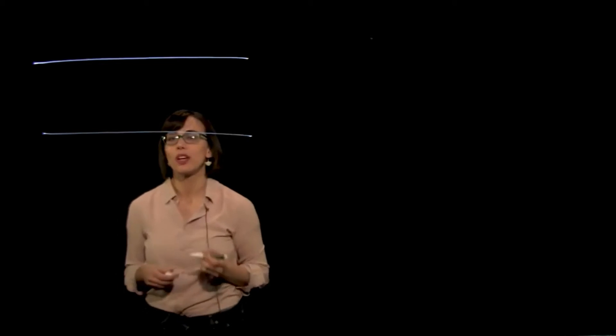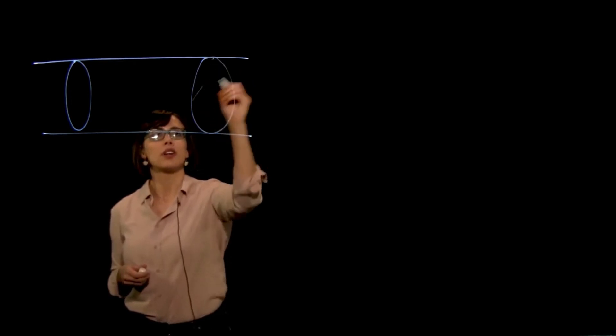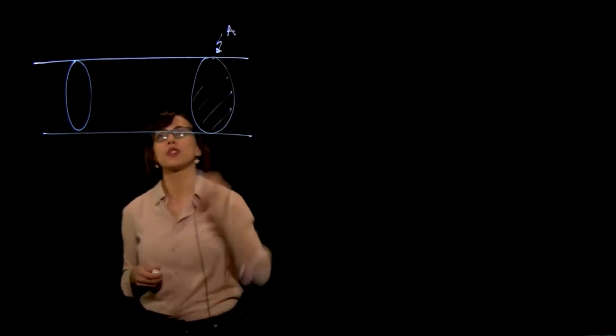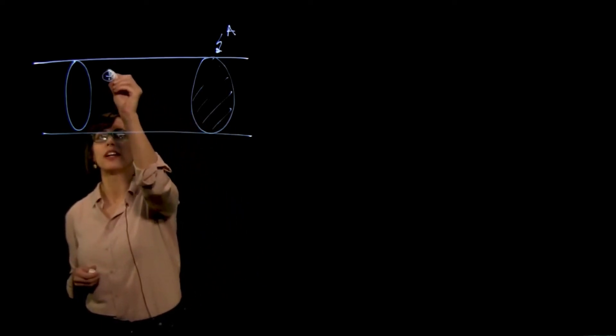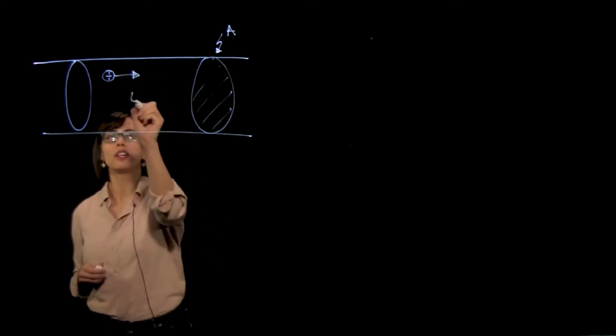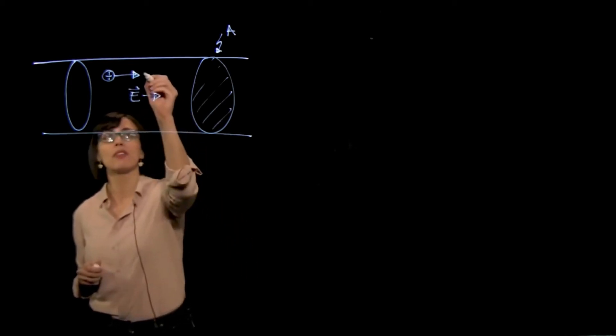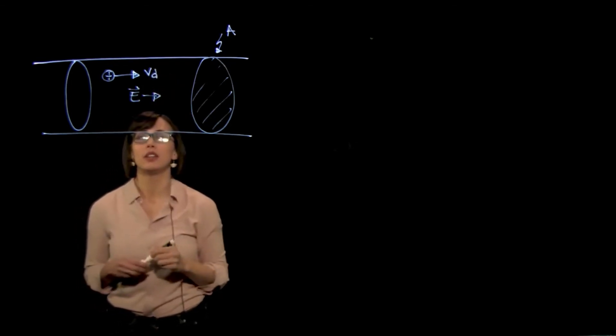Now that we've given you some basic definitions about current, we're actually going to build up a model for how charge flows. The simplest way we can think about charge flowing is a lot of different charge carriers moving down a wire. If we zoom in, we can think of charge flowing through some tube with a cross-sectional area A. Within this tube, we have a lot of different charge carriers — in this example, positive charge carriers — and they are moving down the tube under the influence of some electric field. Each charge carrier is moving with some average velocity that we call Vd, or the drift velocity.